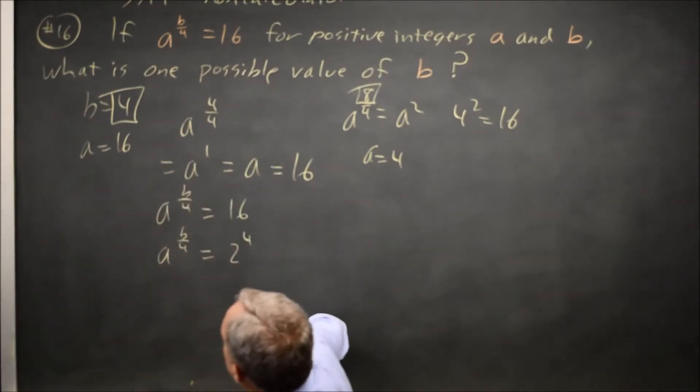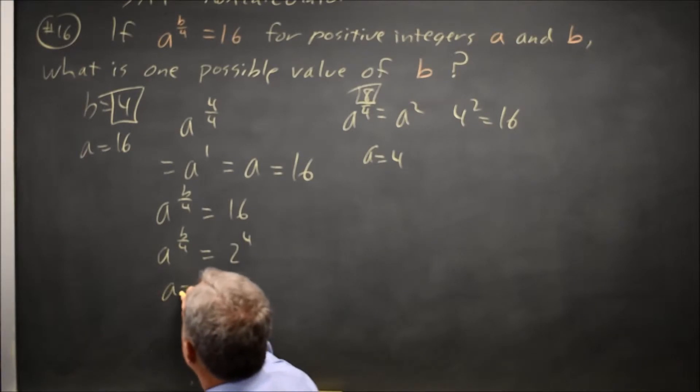So if a equals 2 and b over 4 equals 4, then multiply both sides by 4, I get b equals 16.